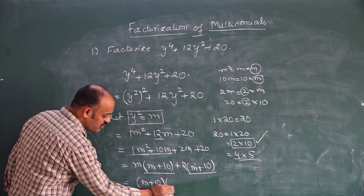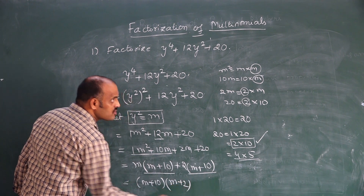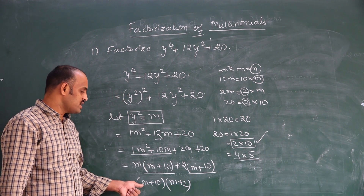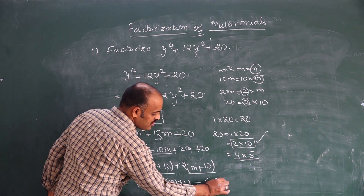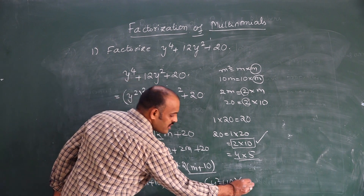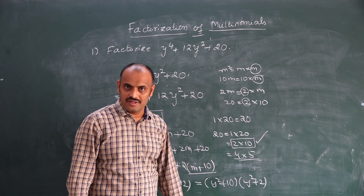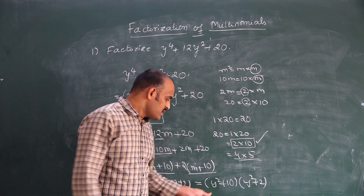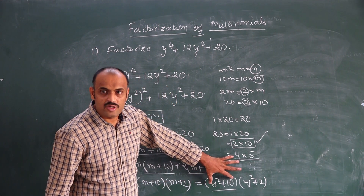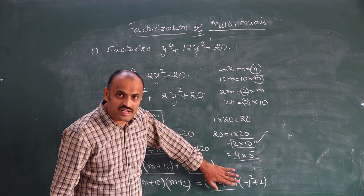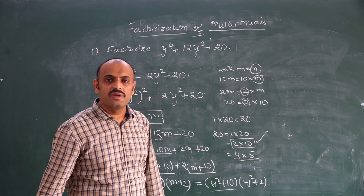Taking (m + 10) as common, we get (m + 10)(m + 2). Since m = y², this becomes (y² + 10)(y² + 2). Can we factor this further? We cannot, because expressions of the form a² + b² (sum of two squares) cannot be factorized further.